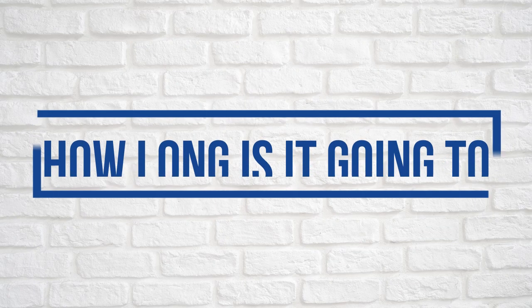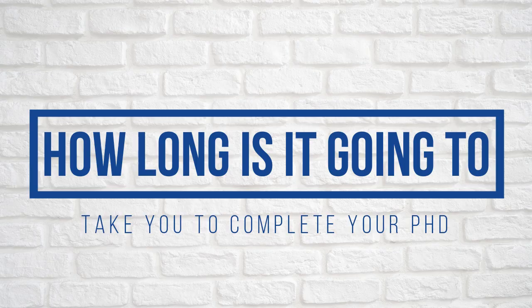The next thing to consider is how long is it going to take you to complete your PhD. Different universities and different countries have different regulations. For example, in Australia it may take three or four years to complete your PhD, whereas in the US it may take much longer.